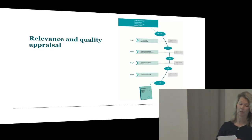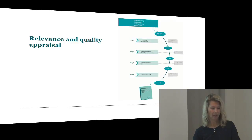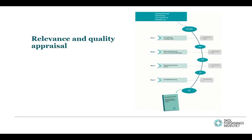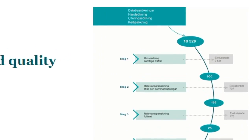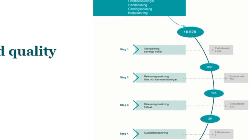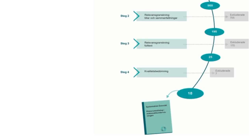This is an illustration of the amount of studies that went through the relevance and quality appraisal. Our search in international databases resulted in 10,528 studies. We at the Institute first went through the studies to sift out those that were clearly not relevant, and ended up with 900, which the researchers then went through. They first read title and abstract and ended up with 195 studies. Then they read the studies in full text and ended up with 25 studies. After the quality appraisal, we had 18 studies left — so there are 18 studies in the systematic review.